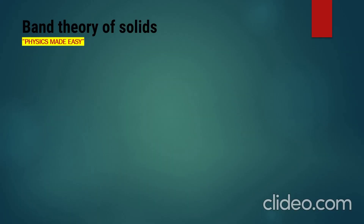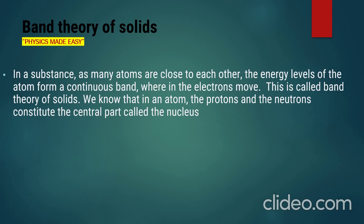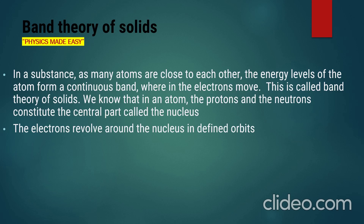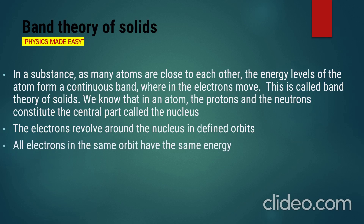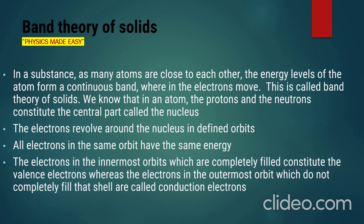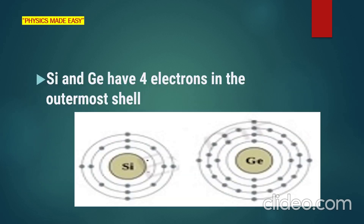Band theory of solids: in our substance, as many atoms are close to each other, the energy levels of the atoms form a continuous band where the electrons move. This is called band theory of solids. We know that in an atom, the protons and neutrons are at the center of the atom, called the nucleus. The electrons revolve around the nucleus in definite orbits, and all electrons in the same orbit have the same energy. The electrons in the innermost orbit, which are completely filled, have complete valence electrons, whereas the electrons in the outermost orbit, which do not completely fill that shell, are called conduction electrons. Silicon and germanium, for example, have four electrons in the outermost shell.